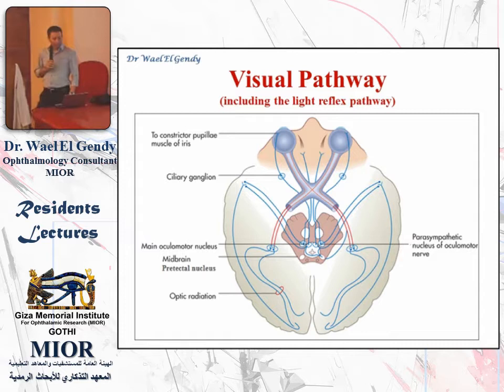In both eyes, in response to stimulation to one eye, both eyes will be responding to that stimulation. Any lesion in front of the light reflex pathway will not affect the light reflex, and any lesion that is behind the light reflex pathway will also not affect the light reflex. We will review some lesion stations that can and cannot affect the pupil — the ones that affect vision but not the pupil.